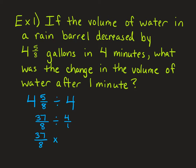divide changes to the opposite, multiply, and switch 4 over 1 to 1 over 4. That's called the multiplicative inverse. So now we have a multiplying problem. 37 times 1 over 8 times 4. That's 37 over 32.